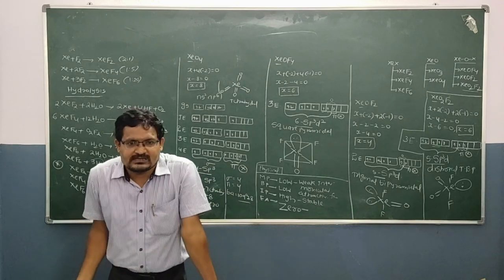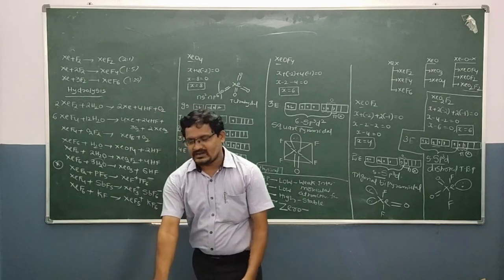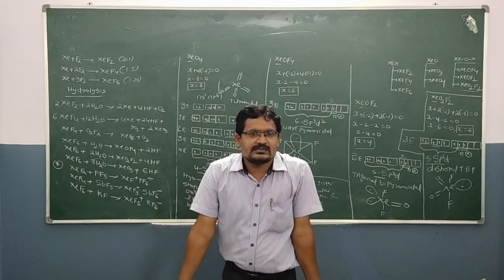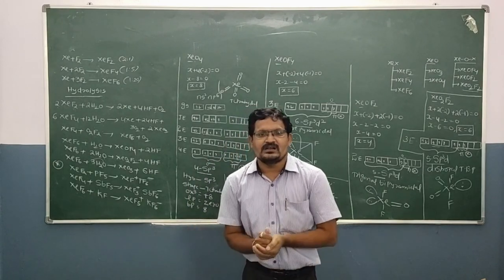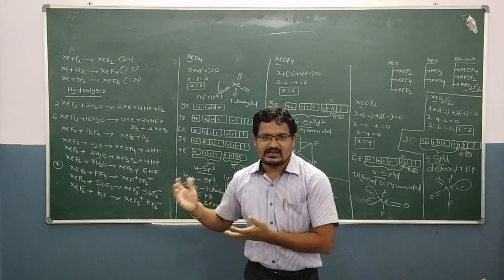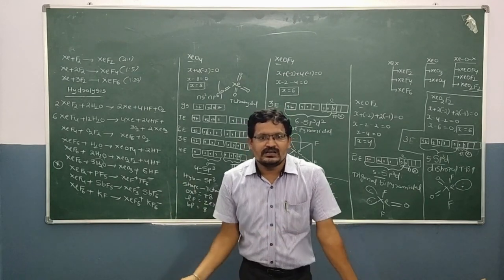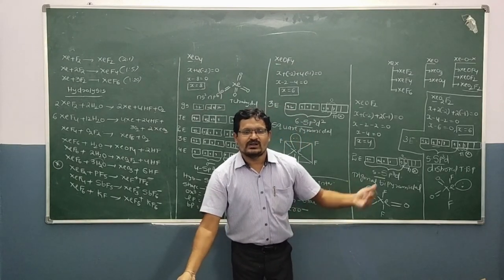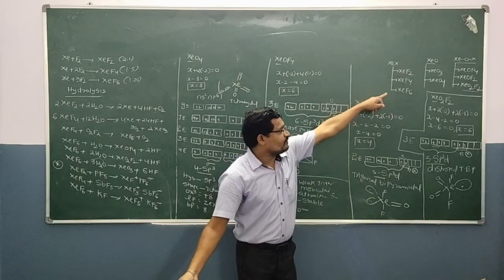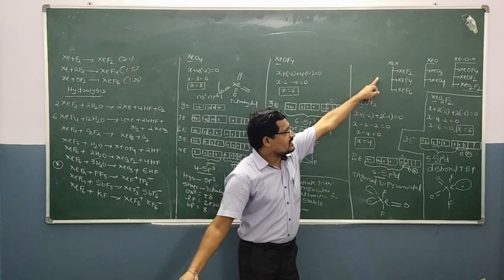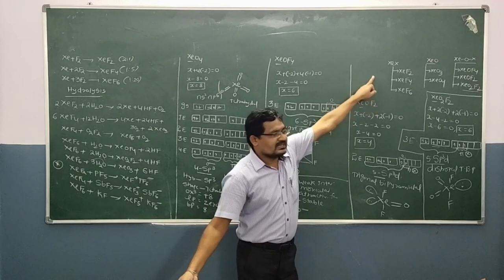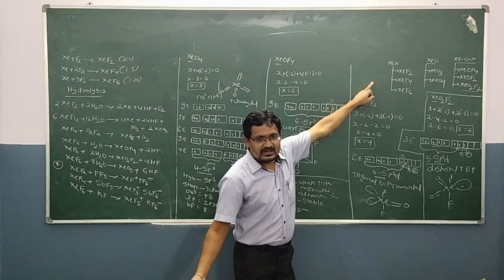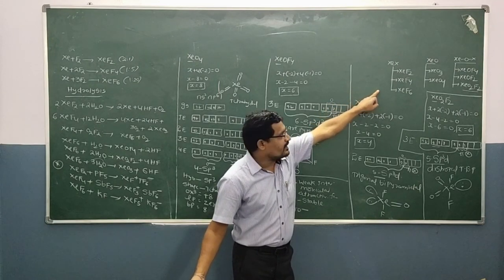Noble gas elements - helium, neon, argon, krypton, xenon, radon - all are monoatomic gas elements. Helium is the lightest gas, and radon is a radioactive element. Xenon compounds: XeF2 (oxidation state +2), XeF4 (oxidation state +4), XeF6 (oxidation state +6). Their hybridizations are sp3d, sp3d2, and sp3d3. Their shapes are linear, square planar, and distorted octahedral. XeO3 has oxidation state +6, XeO4 has oxidation state +8.